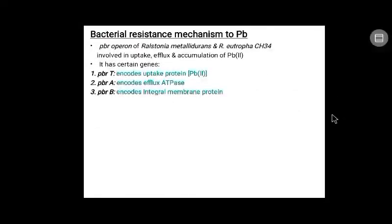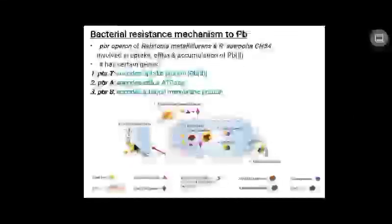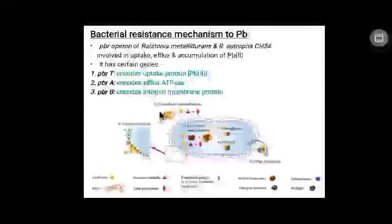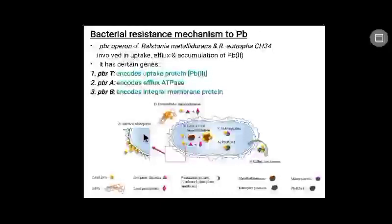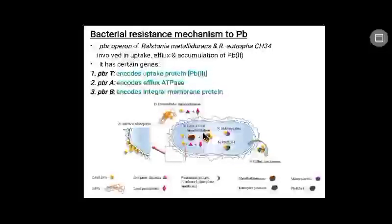Bacterial resistance mechanisms to lead: Ralstonia metallidurans and R. eutropha contain the PBR operon involved in uptake, efflux, and accumulation of lead ions. It has genes PBRT encoding the uptake protein, PBRA encoding efflux ATPases (transport proteins), and PBRB encoding the integral membrane protein. The pictorial representation shows: first, extracellular immobilization where lead ions are sequestered by EPS and immobilized by inorganic ligands to form lead precipitates; second, surface absorption where lead is absorbed by functional groups like carboxylates in the bacterial cell wall; and third, intracellular mobilization through metallothioneins and inorganic ligands.